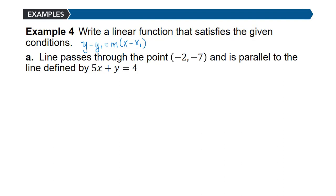In part (a), a line passes through the point (negative 2, negative 7) and is parallel to the line defined by 5x plus y equals 4. Plotting the point (negative 2, negative 7) in the third quadrant, we want a line through this point that is parallel to 5x plus y equals 4. Graphing that line using intercepts: when x equals 0, y is 4; when y equals 0, x is 4/5 (about 0.8).